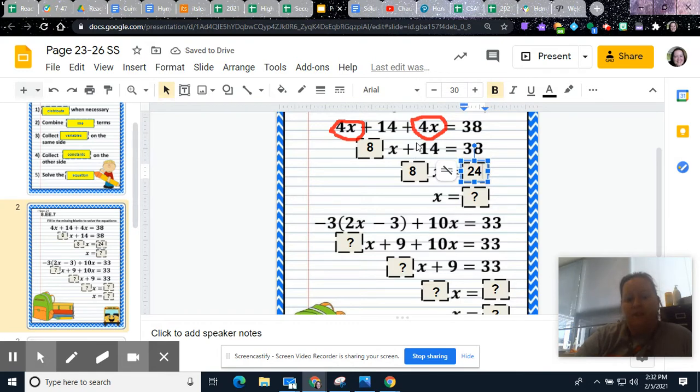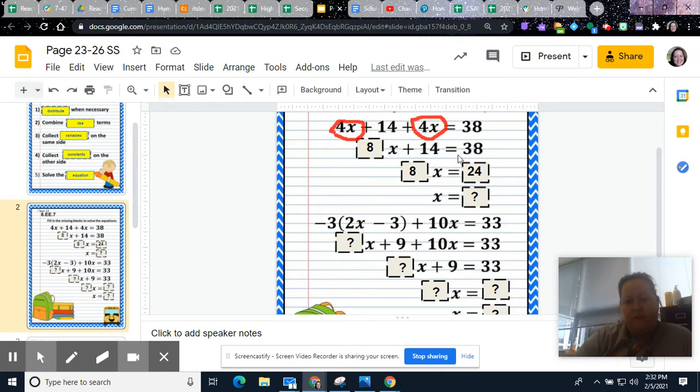So you just, whatever this says, you do the opposite. So since this says plus, you will subtract. Think back to when we did the money bags as equations. It's like I have 14 coins on the left, 38 on the right. How many do they have on both sides? 14. So you can delete 14 from both sides. That's what we're doing here.